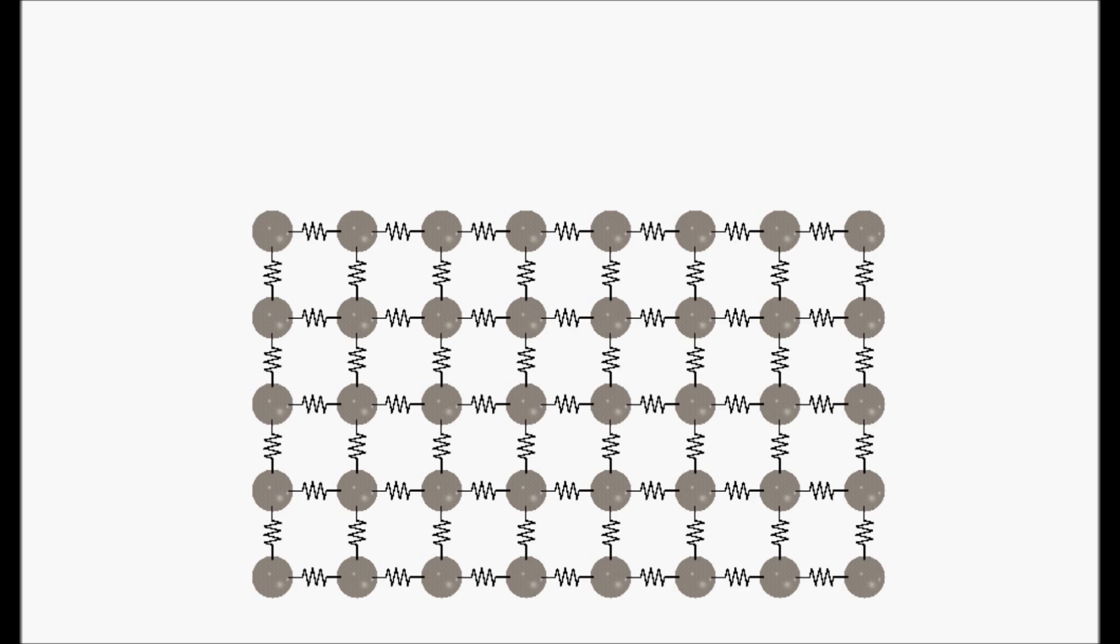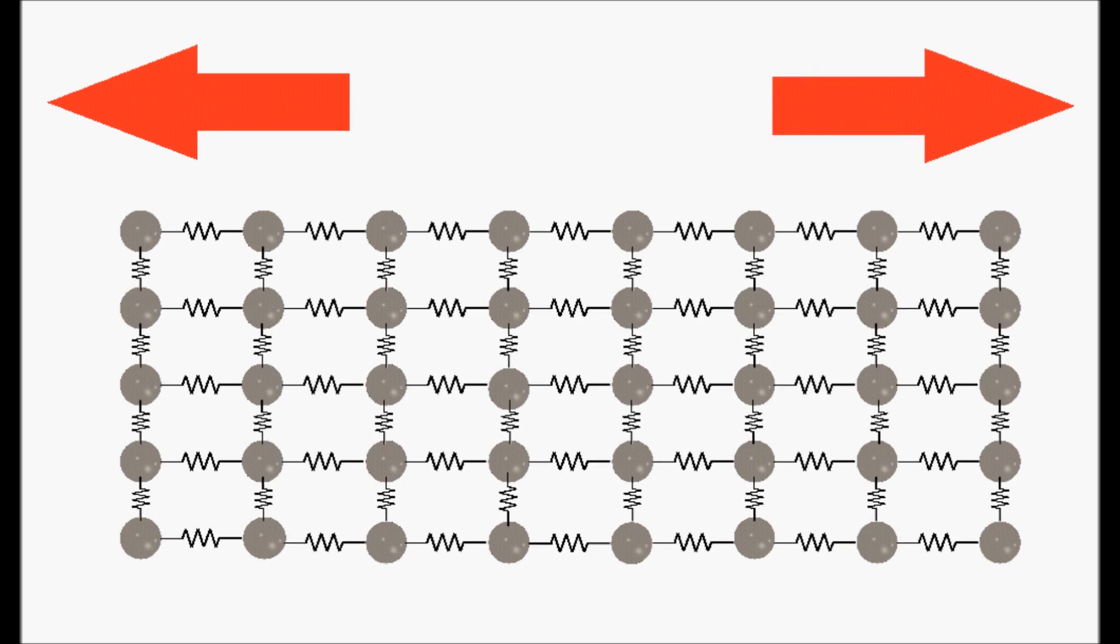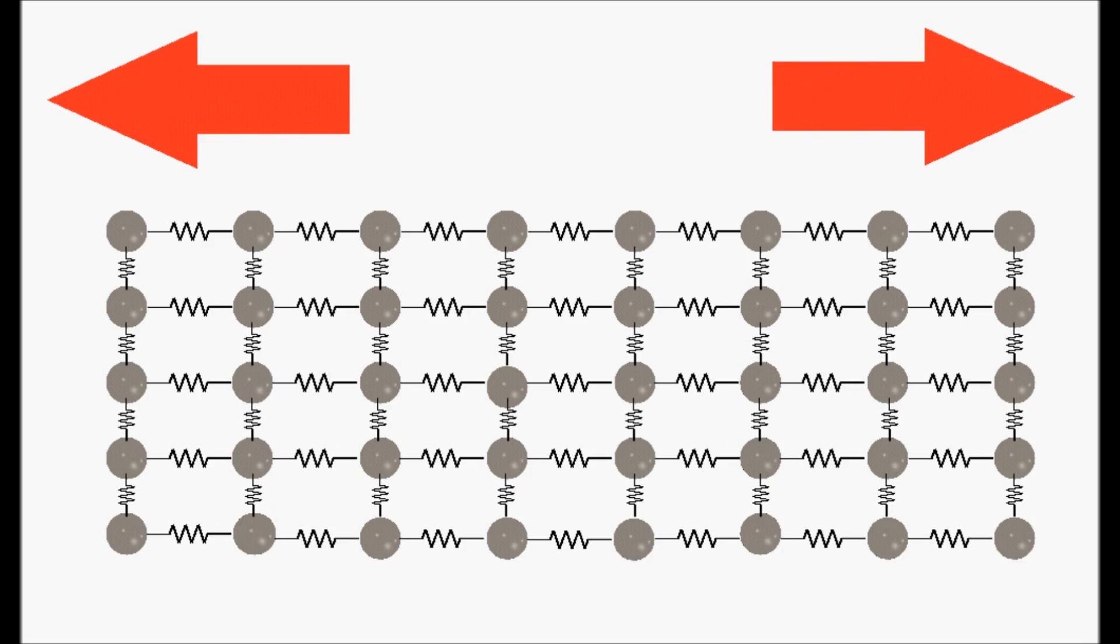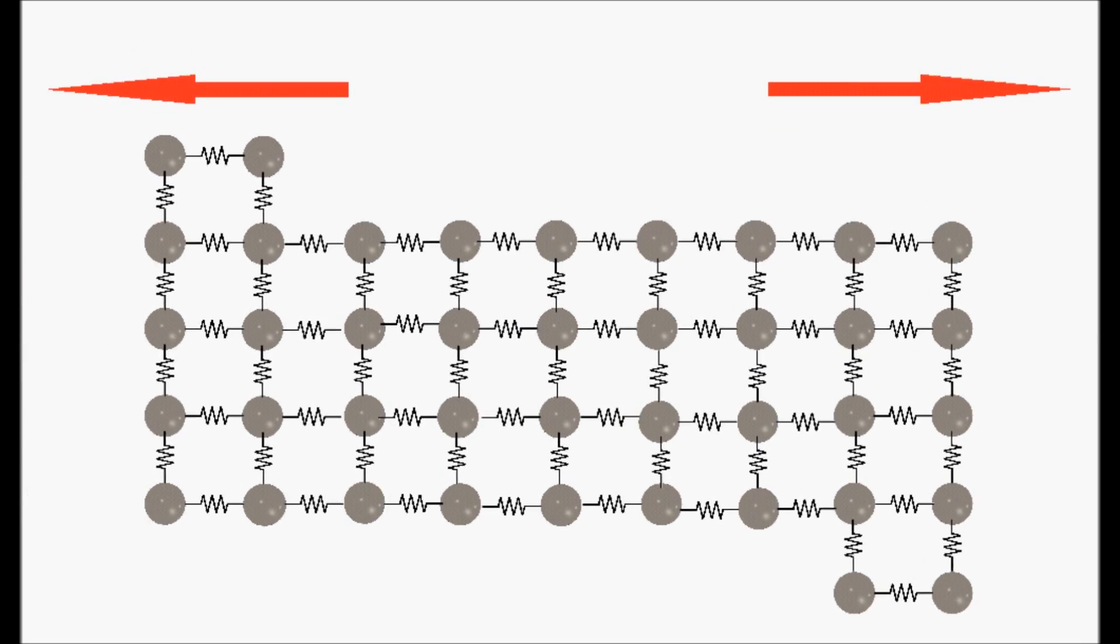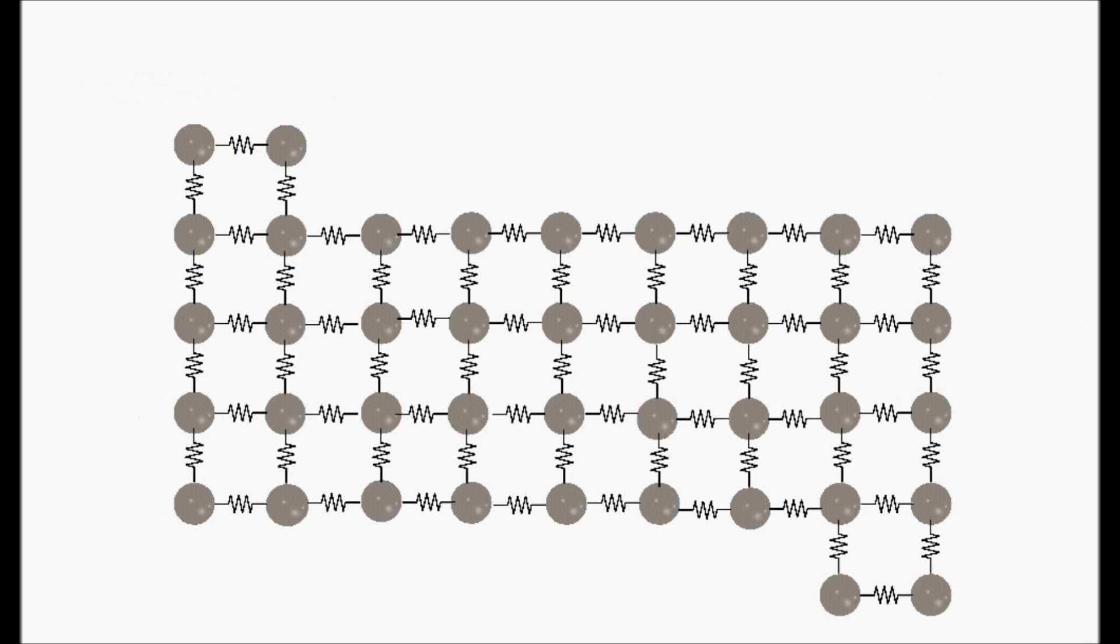However, if we continue to apply the stress and the crystal is ductile, it will deform plastically, which will have a permanent deformation. The tension at which this deformation starts is the yield strength, and it's not only depending on the chemical bonding.